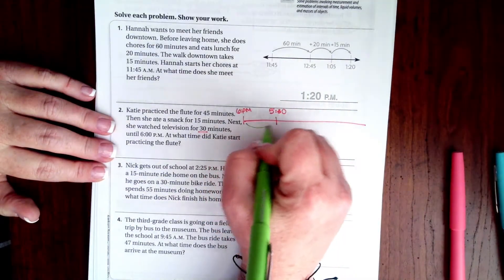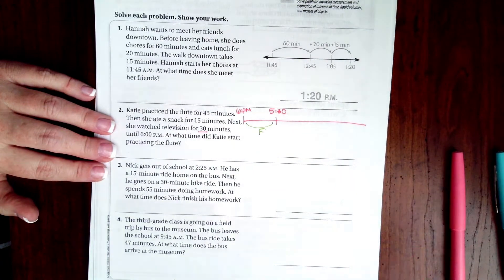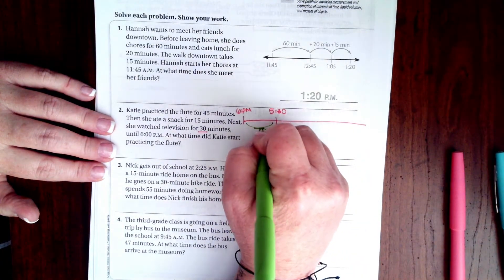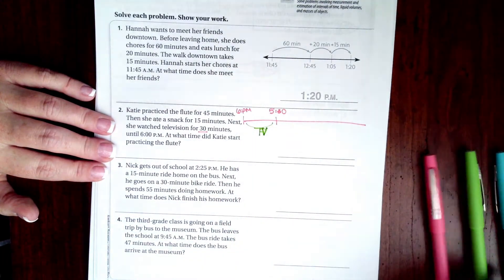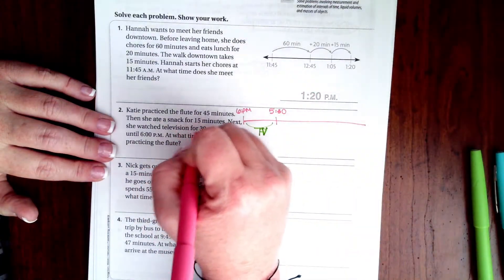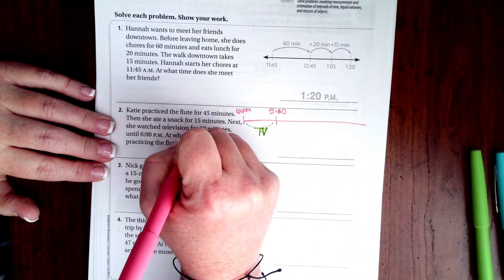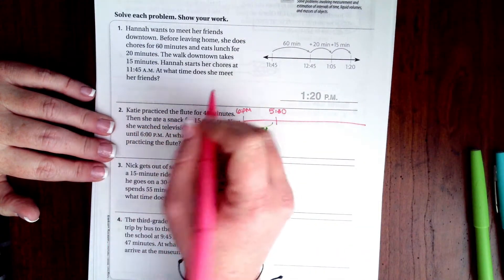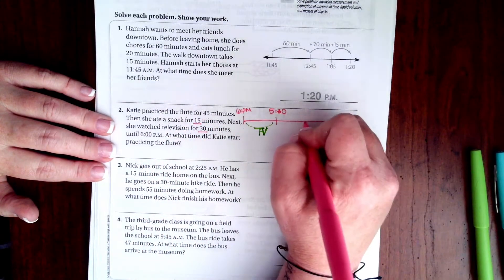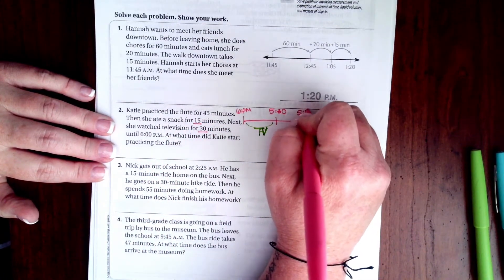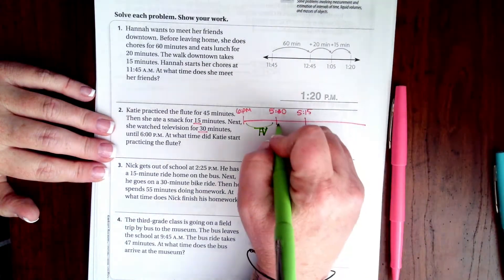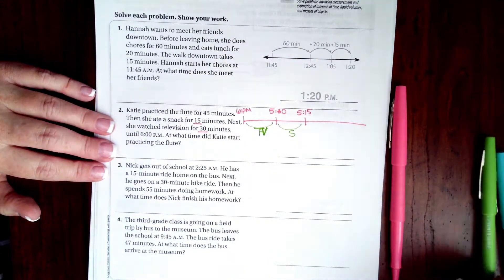So that one's TV. Now she had a snack for 15 minutes, so if I go back 15 minutes, that gets us to 5:15. That's our snack time.